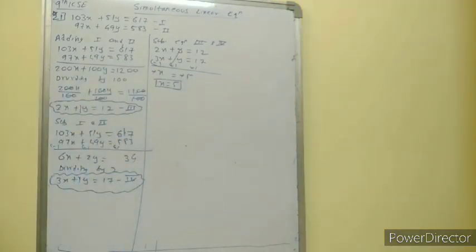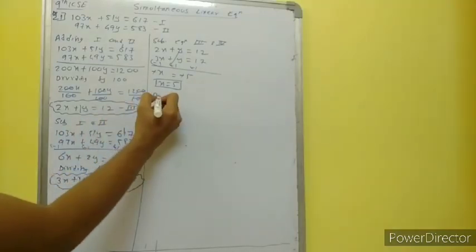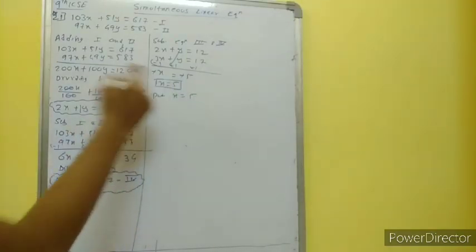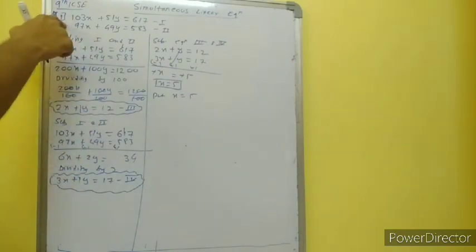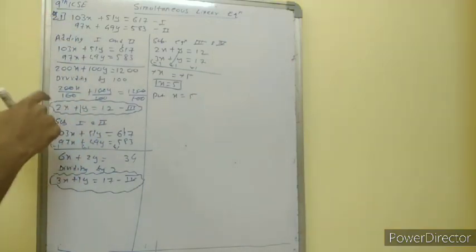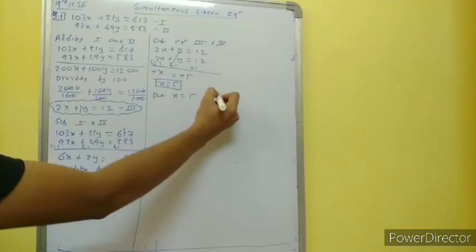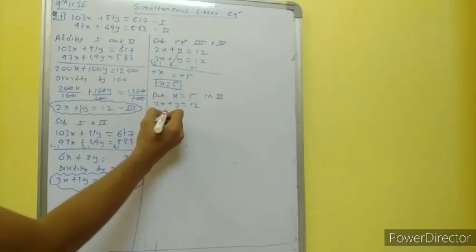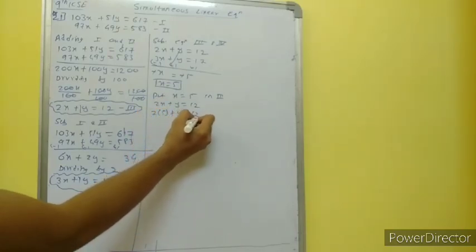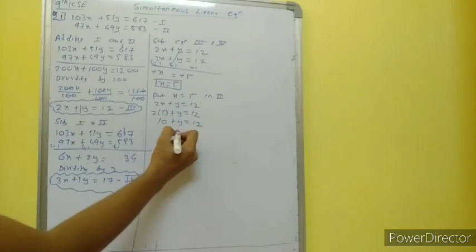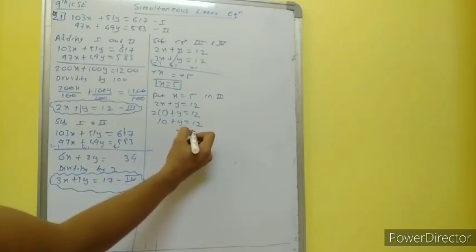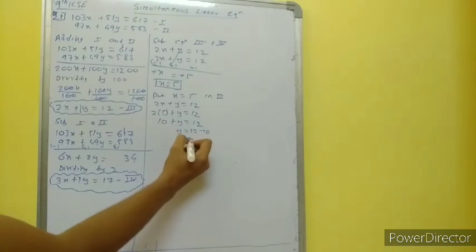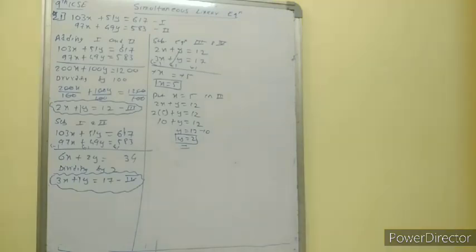We have the value of x as 5. Now put x equal to 5 in equation 3, which is the easier equation: 2x plus y is equal to 12. 2 into 5 plus y is equal to 12; 10 plus y is equal to 12; y is equal to 12 minus 10, so y is equal to 2. We have the value of x and y.